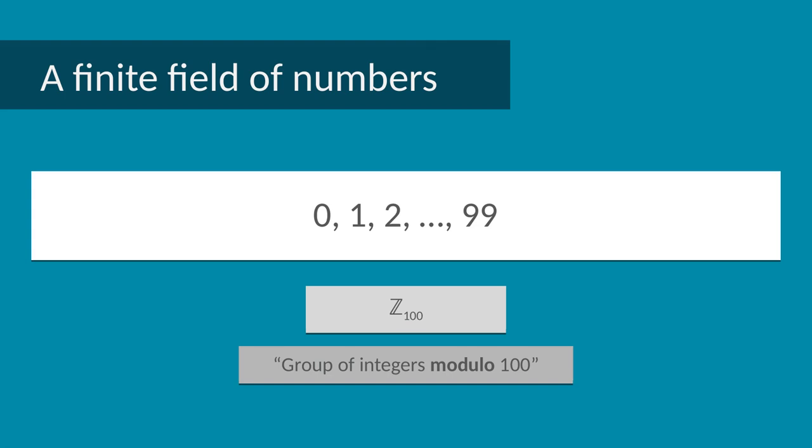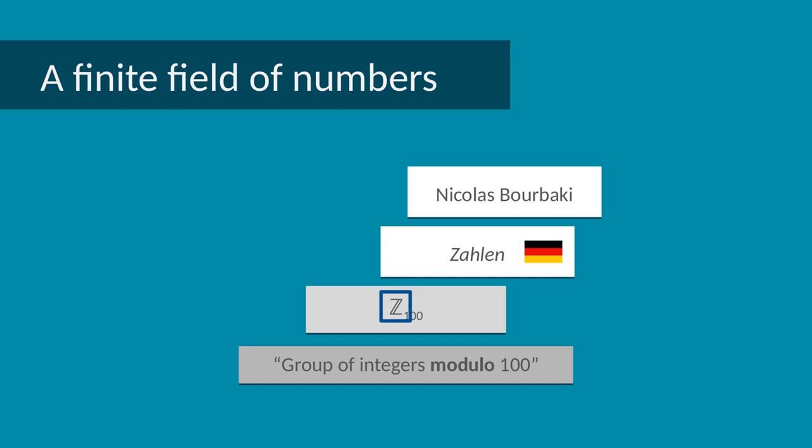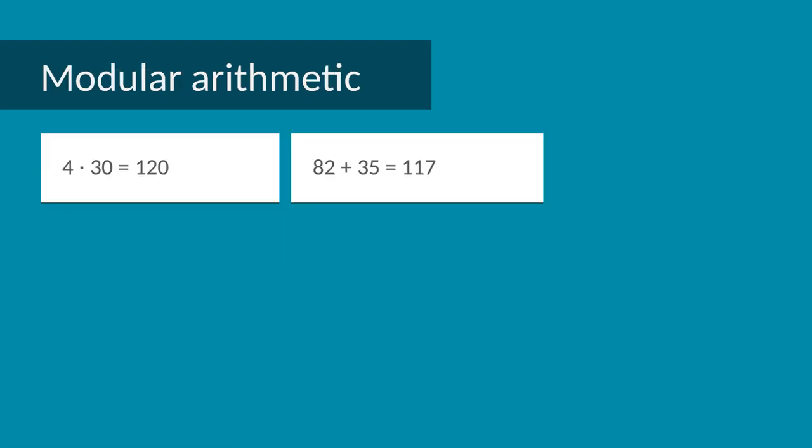By the way, Z here supposedly comes from the German word Zahlen, meaning numbers. It was introduced in an article written by Nicolas Bourbaki, which is actually a pseudonym for a group of mathematicians who surprisingly mostly speak French. Etymology in mathematics can be confusing. If you're interested in these things, look into the etymology of the word field on the page linked in the video description. But back to our group, it's obvious this collection of elements is finite and we need to slightly change the addition and multiplication operations so that the results stay within the collection of numbers.